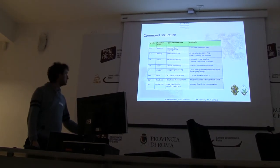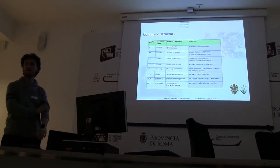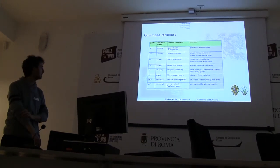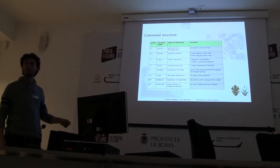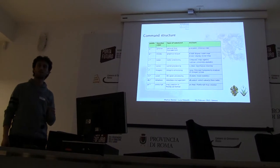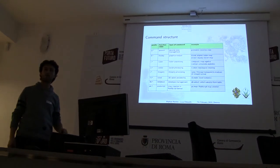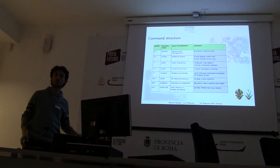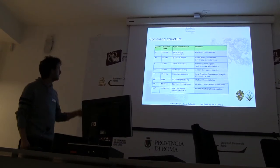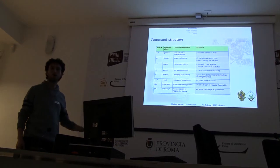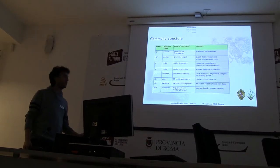GRASS has several modules organized into eight classes. Every command starts with a letter. G is for general commands — usually to work with maps, rename maps, copy, delete. For example, G.rename is to rename maps, and G.remove is to remove maps. D is for display — displaying raster, vector, and relations.